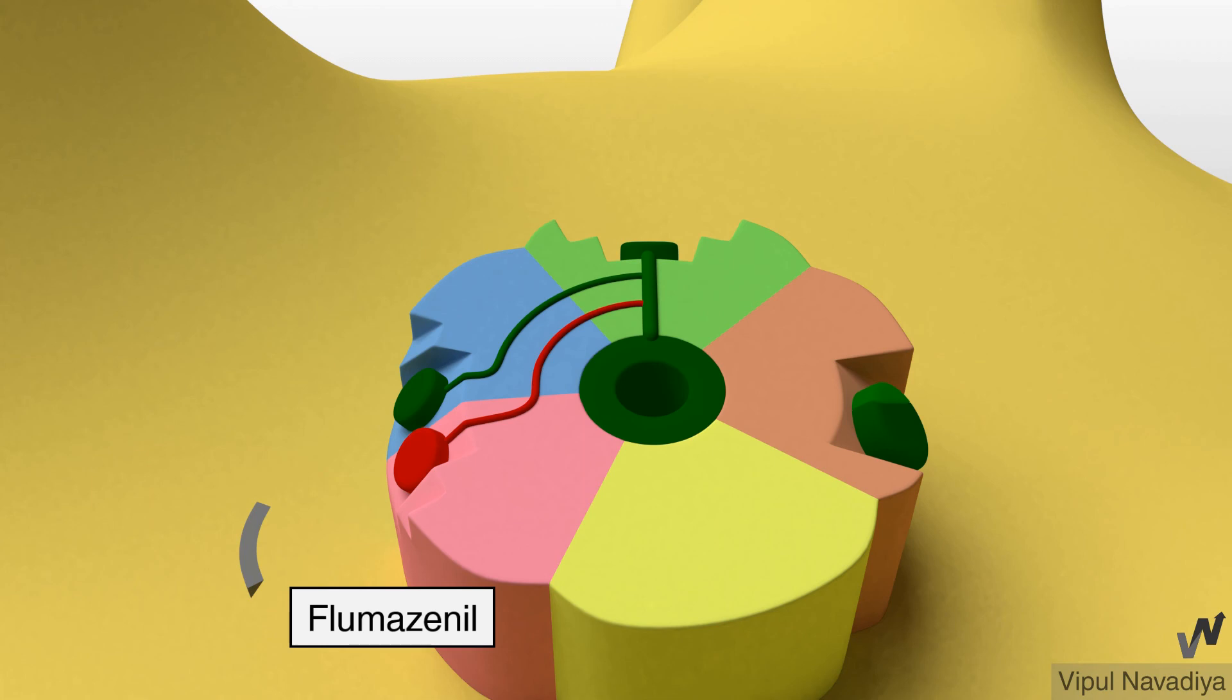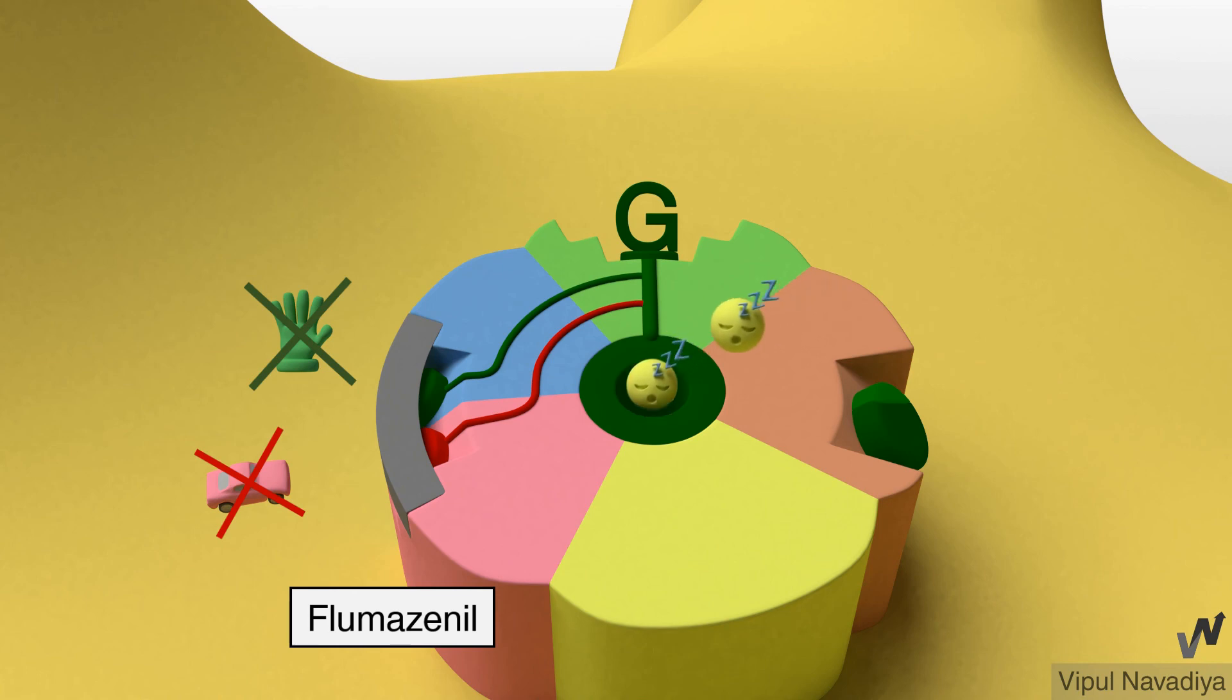Next drug here is a gentleman flumazenil. It is a competitive antagonist at this site. It gently prevents diazepam as well as beta-carboline from producing their effects and lets GABA do its job. So in presence of flumazenil, neither diazepam is able to further calm the neuron down nor beta-carboline is able to excite it. So it can be used as a specific antidote in case of poisoning of benzodiazepines or beta-carboline.